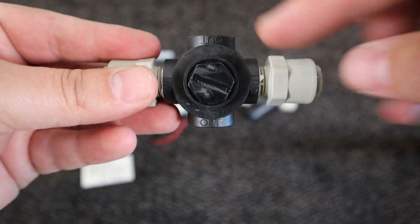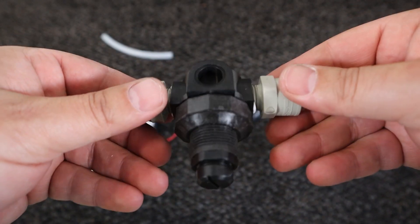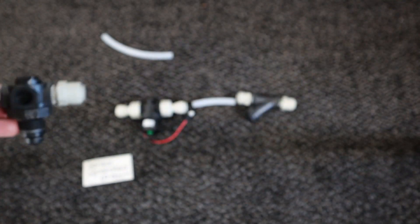Lastly, when connecting the regulator ensure that the solenoid valve is connected to the in opening on the regulator and the out opening is connected to the bubbler.